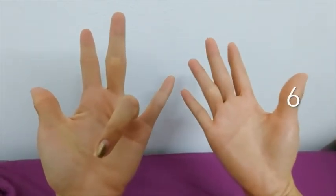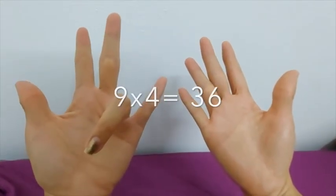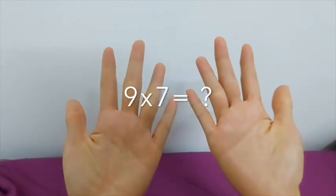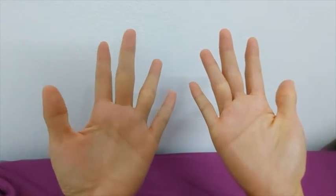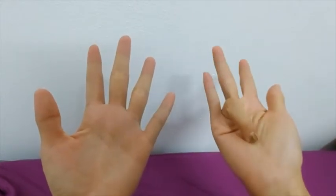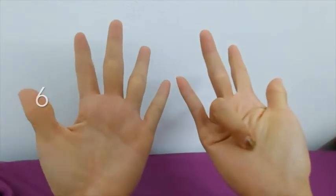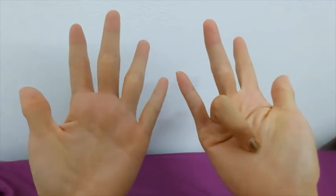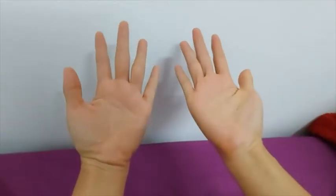Now how about nine times seven? You want to count from one, two, three, four, five, six, seven. And now you have six fingers before that and three after that, so the answer is 63.